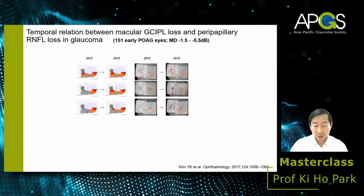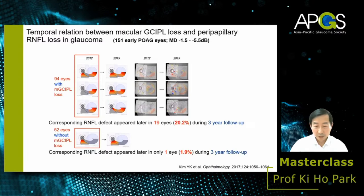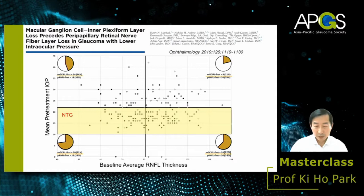The temporal relation between macular GCIPL loss and peripapillary RNFL loss has been studied. After three years of follow-up of 94 eyes with GCIPL loss, a corresponding RNFL defect was detected in about 20%. In contrast, among 52 eyes without GCIPL loss, an RNFL defect appeared in only about 2%, meaning GCIPL change appears earlier in most cases — particularly in normal tension glaucoma eyes in Korea. Australian researchers similarly showed GCIPL loss is detected earlier than RNFL loss in normal tension glaucoma compared to high tension glaucoma.